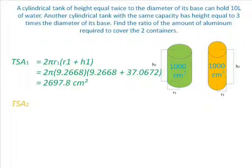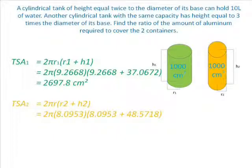And now, the total surface area of the second cylindrical tank is equal to 2 pi R2 times (R2 plus H2), which is equal to 2 pi times 8.09 times (8.09 plus 48.57), and that will give us an answer of 2882.3 cm squared.